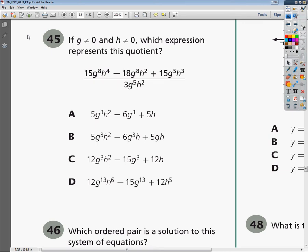Alright, this is the Tennessee End of Course Practice Test for Algebra 2. Question number 45. The question says, if G is not 0 and H is not 0, which expression represents this quotient?